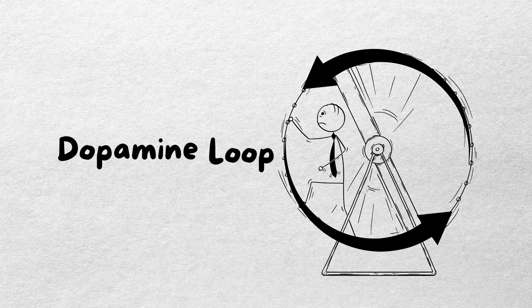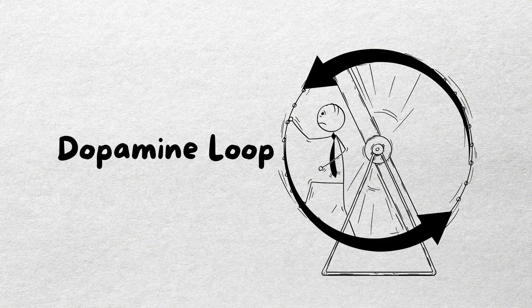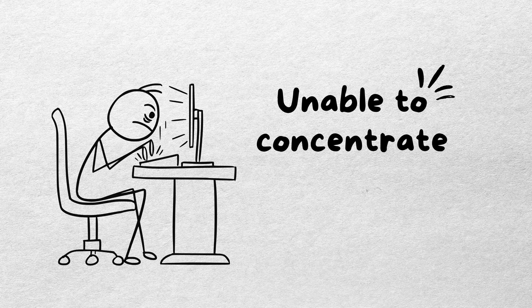This phenomenon is called the dopamine loop. The more you scroll, the more you want to scroll. Your brain gets addicted to the feeling of immediate gratification. That's why your focus is shattered.